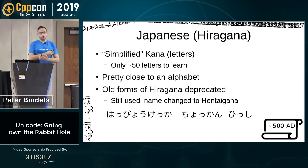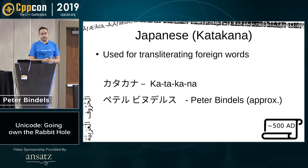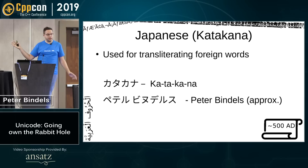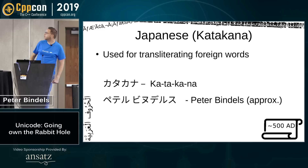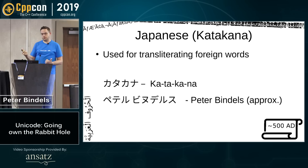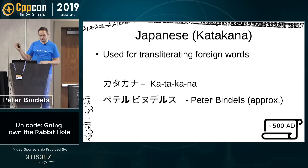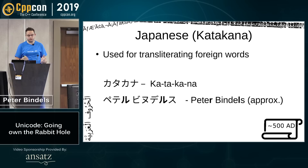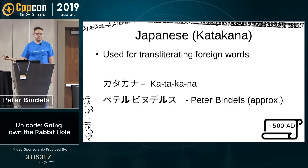Japan also has a third script called katakana, used for transliterating foreign words. For example, 'peterubindersu' is an attempt at rendering the speaker's own name. The name contains both R and L sounds, but in Japanese they map to the same character because Japanese doesn't have two different sounds for them. So transliterating to katakana loses information.